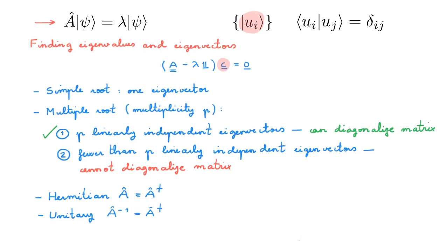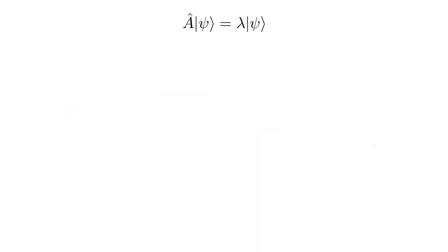This probably all sounds rather abstract, and I have links to external references in the description if you want to learn more. But from a practical point of view, all we really need to do quantum mechanics is to get enough practice in diagonalizing matrices, and this essentially amounts to following a recipe. This is why I want to finish by looking at an explicit mathematical example of finding the eigenvalues and eigenvectors of a matrix.